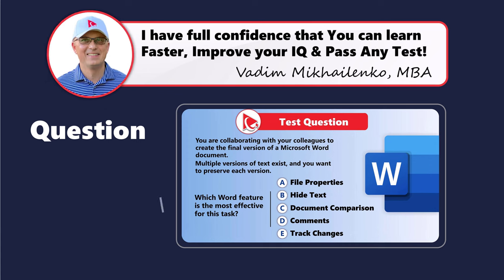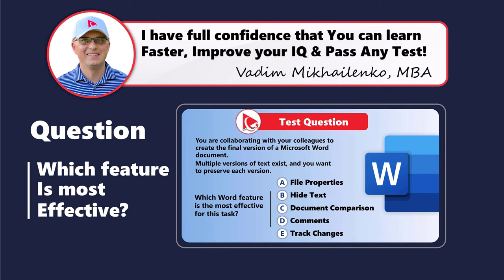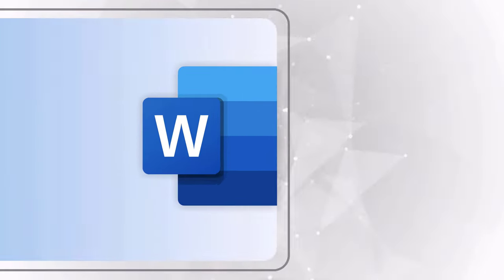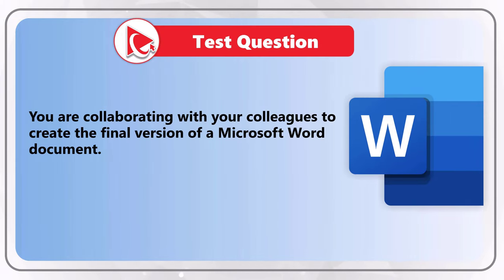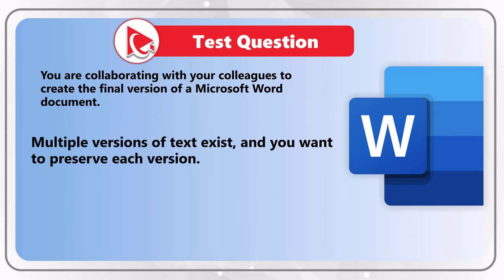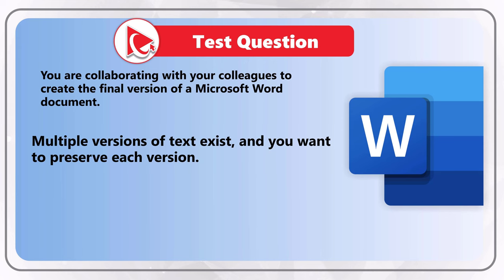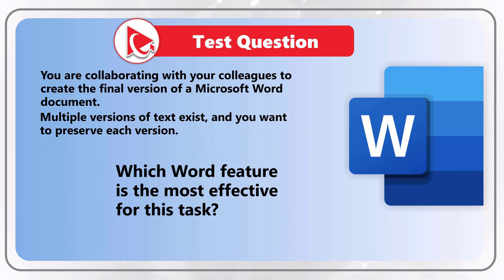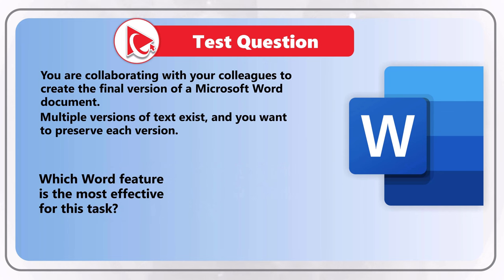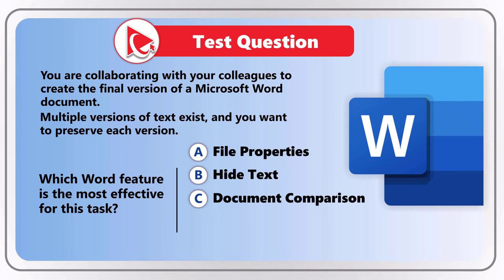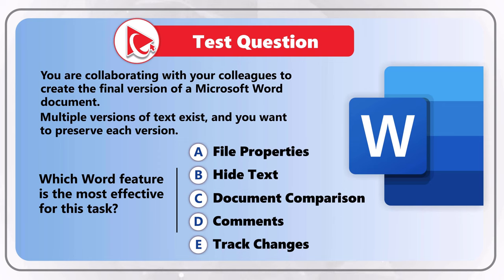What's amazing about this question is that you will not just learn the answer, but also learn about new features of the application. Here's the next question: You are collaborating with colleagues to create the final version of a Microsoft Word document. Multiple versions of text exist and you want to preserve each version. Which Word feature is the most effective for this task? You are presented with five choices: Choice A, File Properties; Choice B, Hide Text; Choice C, Document Comparison; Choice D, Comments; and Choice E, Track Changes.